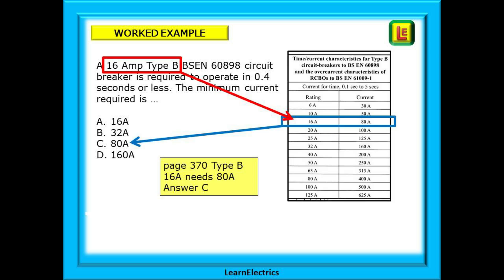Use the information in the question. It tells us it is a 16 amp type B breaker and the time is 0.4 seconds or less. Looking at the table we can find 16 amps and this tells us that the fault current must be at least 80 amps so we should choose answer C. If you are on the right page you will find the right answer.